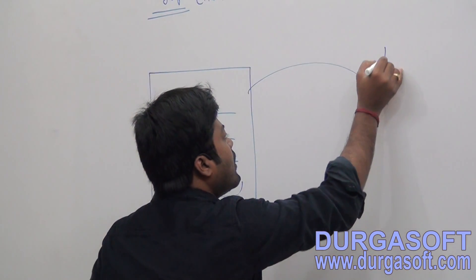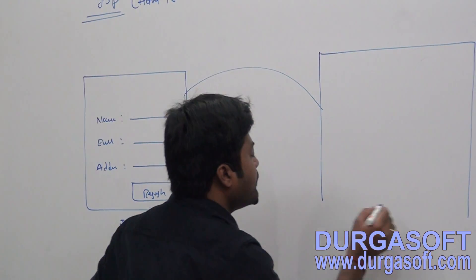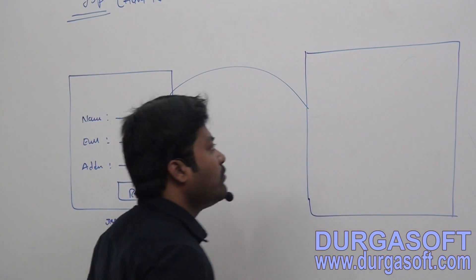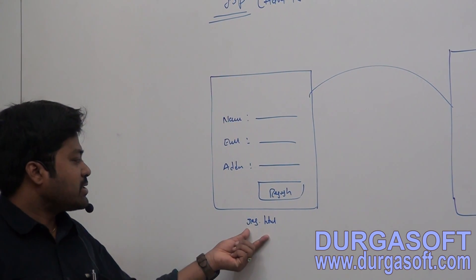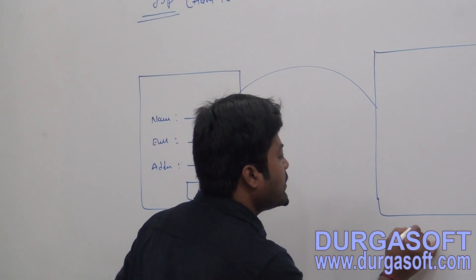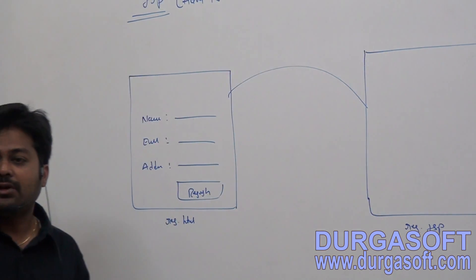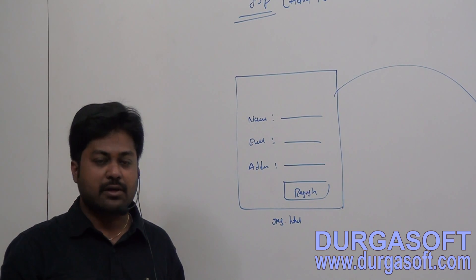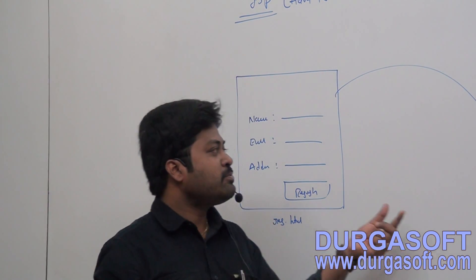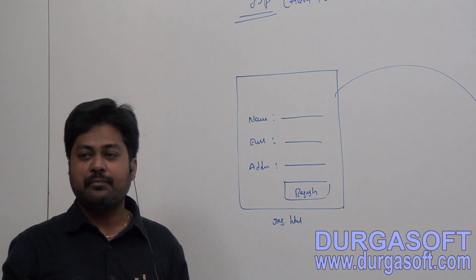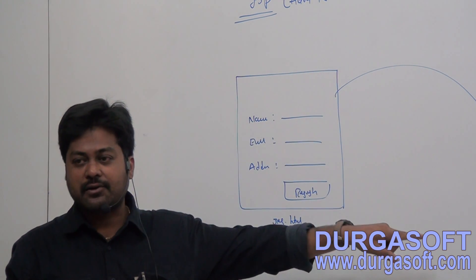You can submit one form's data directly to another form — you can map one form's data to any other form. Here, registration.html data I want to forward to registration.jsp. Similar to a servlet, you submit your form data to a JSP page, and in this JSP page you want to read the requested form data.